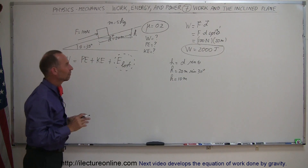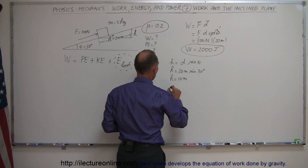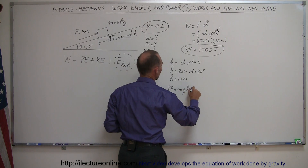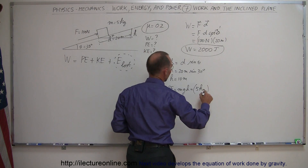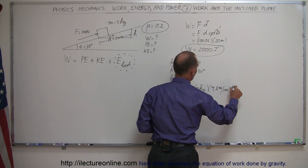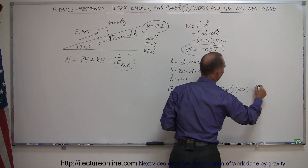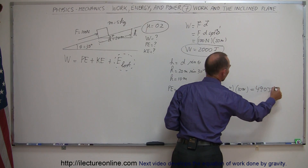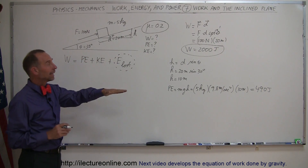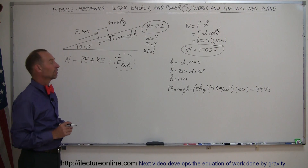Now that we know the height, we can calculate the potential energy gained by the object. Potential energy equals mgh: 5 kilograms × 9.8 m/s² × 10 meters = 490 joules. So out of the 2,000 joules of work done, 490 joules is used to give the object additional potential energy by gaining a height of 10 meters.